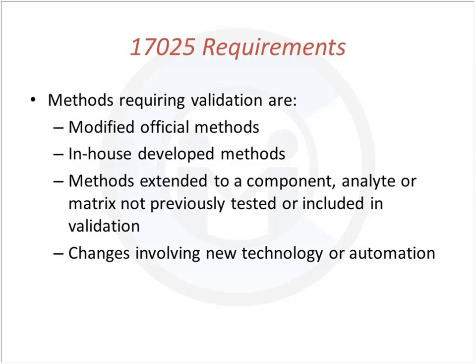Similarly, if you're extending a method to a component or matrix not previously tested or included in the validation study, you have to assess whether the method performs equally well with that new matrix — looking at certain performance parameters that could be impacted, not all of them. For example, for a quantitative method you look at relative recovery; for a qualitative method you look at sensitivity and specificity. Any changes involving new technology or automation also have to be validated. ISO 17025 does have these requirements, though they're not always clearly spelled out.